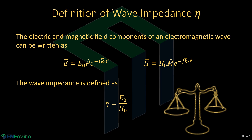I think of impedance as a scale weighing the electric field and magnetic field. The only thing about that analogy is that it doesn't really account for phase — that maybe makes sense for the magnitude, but not so much for phase. To jump ahead, the impedance of a medium will turn out to be the square root of the permeability divided by the permittivity. These are not the free space terms or the relative terms — this is the total permeability and the total permittivity.